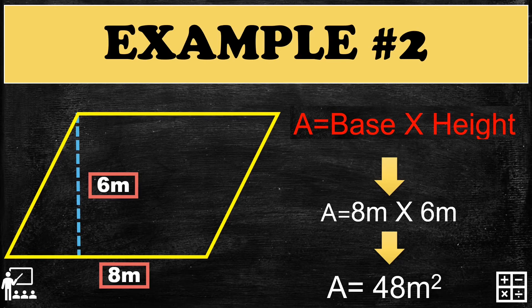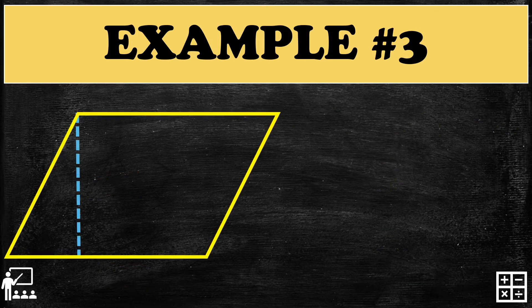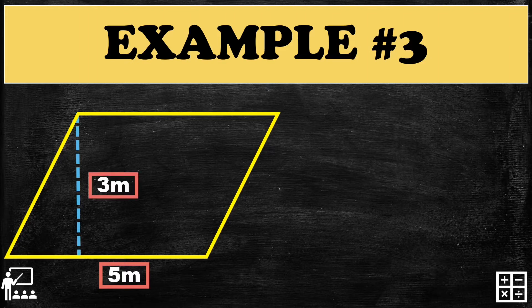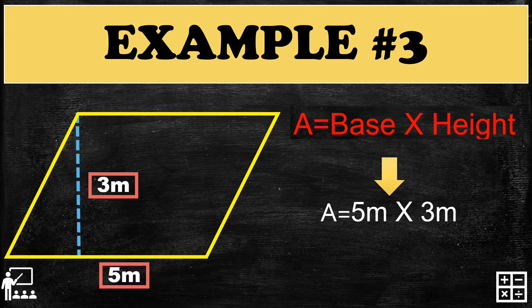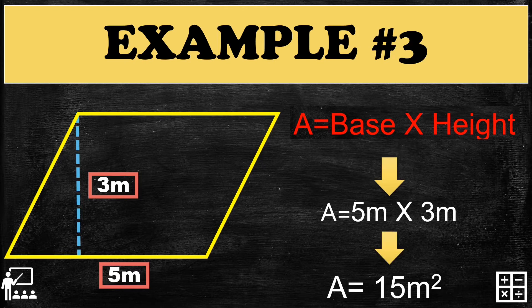Let's try another example. A parallelogram has a base of 5 meters and a height of 3 meters. Using the formula and substituting the values — can you guess what the area is? Correct! It is 15 meters squared.